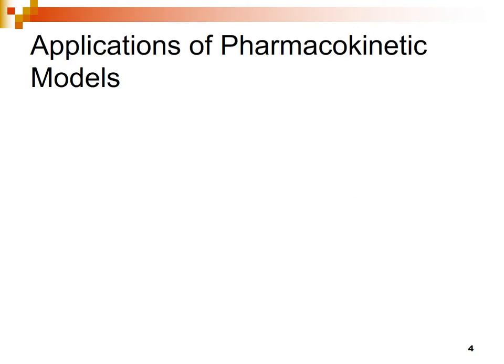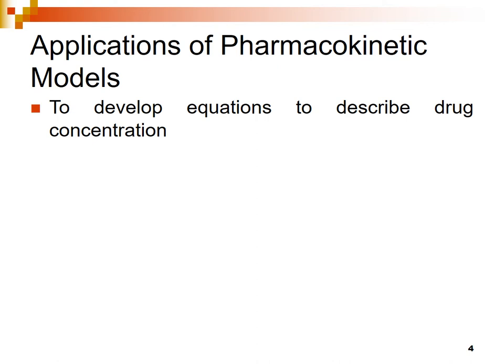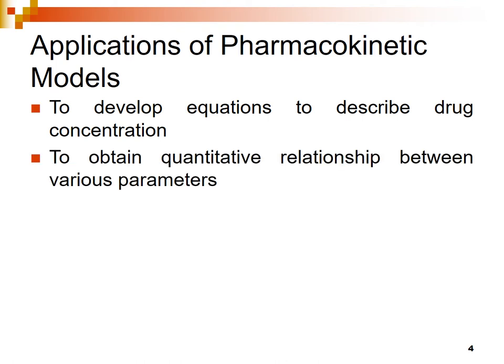Applications of pharmacokinetic models. First, to develop equations to describe drug concentration — we can use pharmacokinetic models to derive equations to calculate the concentration of drug at different time points after administration of the dose. Second application: to obtain quantitative relationships between various pharmacokinetic parameters, like volume of distribution, clearance, elimination rate, half-life, excretion rate constant, absorption rate constant, etc.